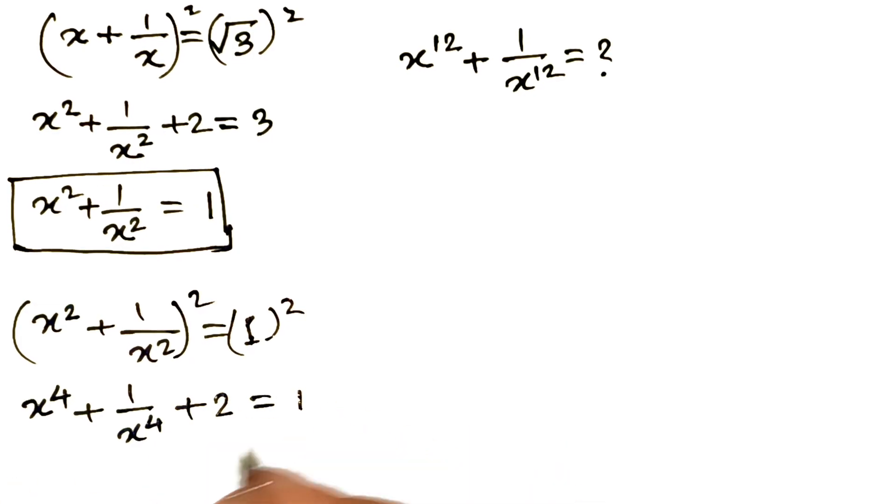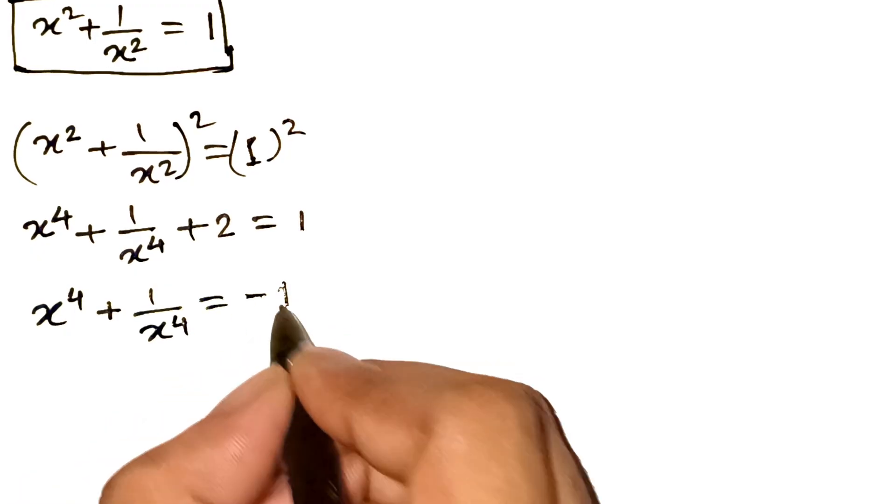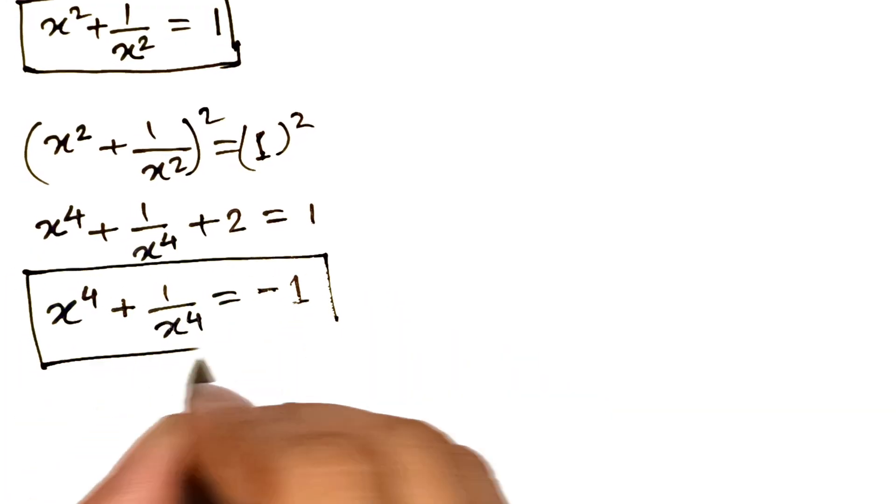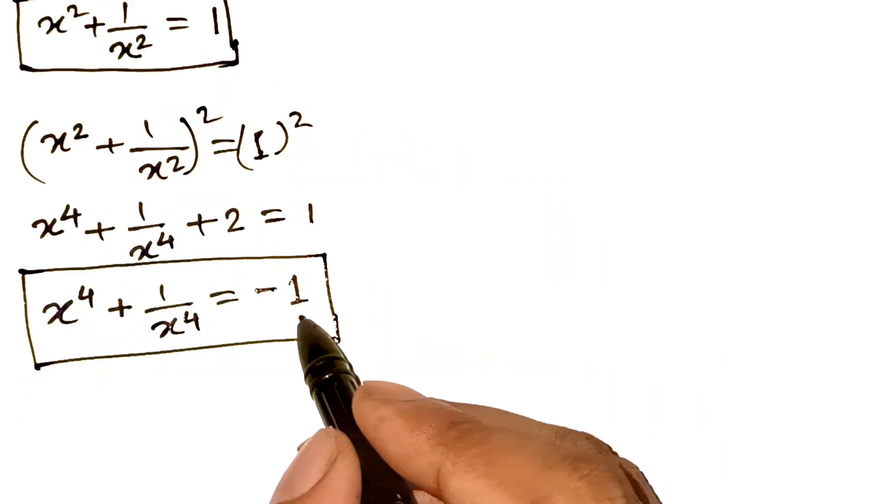Subtract 2 again, and we find x to the power 4 plus 1 over x to the power 4 equals minus 1. Aha! Now you can see a pattern starting to form. First we got 1, now we got minus 1.